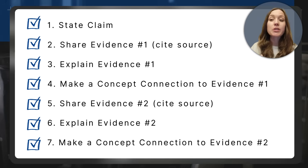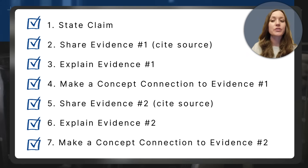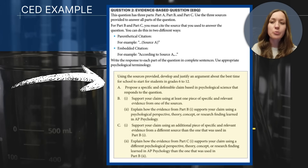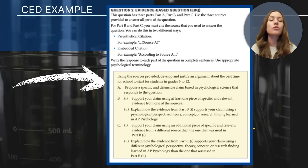In total, the EBQ is worth seven points. You make a claim, share one piece of evidence, explain that evidence, and make a connection to it. Then you share a second piece of evidence that supports your claim, explain it, and make another connection using a new concept. Because the EBQ contains three sources, I won't go through a full example in this video, but I do want to show you what a sample response looks like using the sample prompt given in the CED.